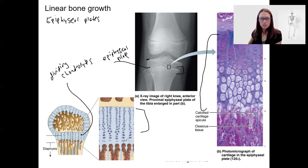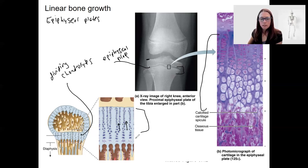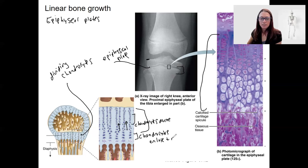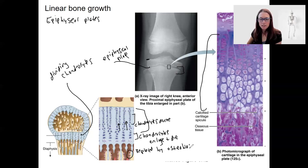What's going to happen is the chondrocytes are going to be dividing and pushing up this way. Here we have chondrocytes dividing up towards the top. Below that, chondrocytes are going to be enlarging and then die. They are then going to be replaced by osteoblasts that will then calcify and be bone.